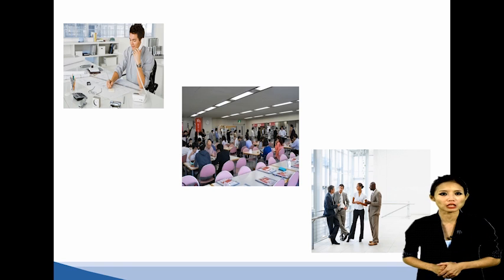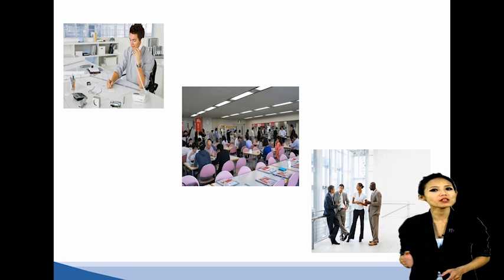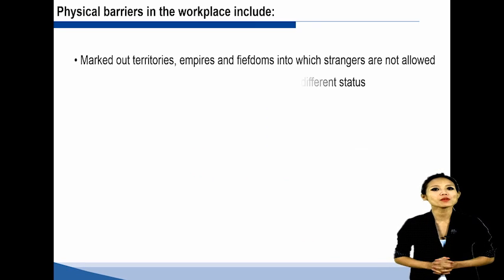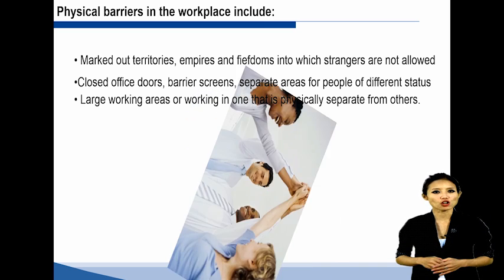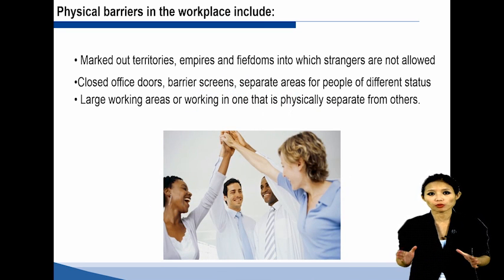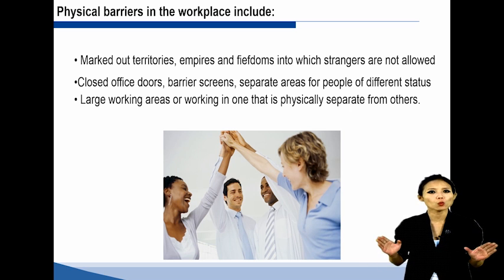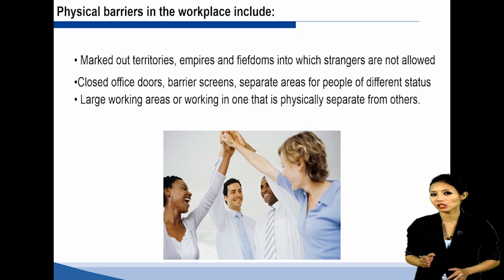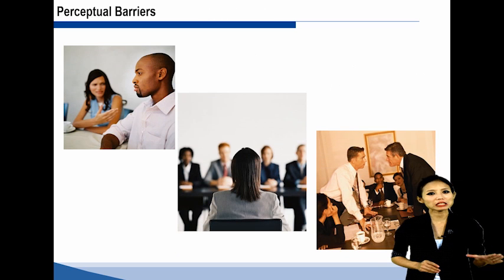When this happens, it is always important that you find different means to communicate. We can call them on the phone, spend lunch with our office mates, and do other activities with them to get to know them more. Physical barriers in the workplace include marked-out territories and fiefdoms into which strangers are not allowed, close office doors, barriers and screens separating areas for people of different status, and large working areas or working in areas that are physically separate from others. Research shows that one of the most important factors in building cohesive teams is proximity.